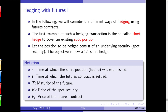We'll start with a one-to-one short hedge. We have to cover an existing long position, a spot position. For example, we bought a stock and we are now the proud owner of a stock of Deutsche Bank. So let's assume you are the proud owner of that stock and 10 years back you decide to hedge your position.